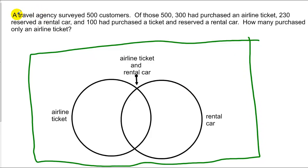So we have a situation where a travel agency surveys 500 customers. Everybody within this giant rectangle should be a total of 500 people. And of those 500 people, we find that 300 purchase an airplane ticket and 230 reserved a rental car. It also tells us that 100 purchased a ticket and a rental car together. So we know that within this overlapped region, we have 100.